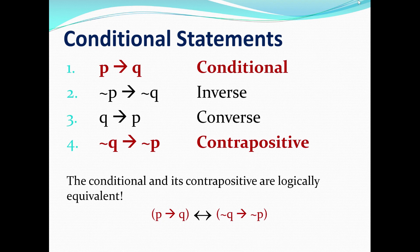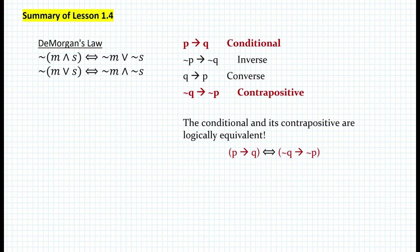Here's the summary of today's lesson. First, we learned about De Morgan's Law: the negation of the quantity M and S turns into not M or not S, and the negation of the quantity M or S is logically equivalent to not M and not S. Then we learned about conditional, inverse, converse, and contrapositive statements. We also learned that the conditional statement and its contrapositive are always logically equivalent. I hope you enjoyed today's lesson. If you have any questions, please post a comment to this YouTube video. Please don't forget to subscribe and hit the like button. Have a wonderful day.